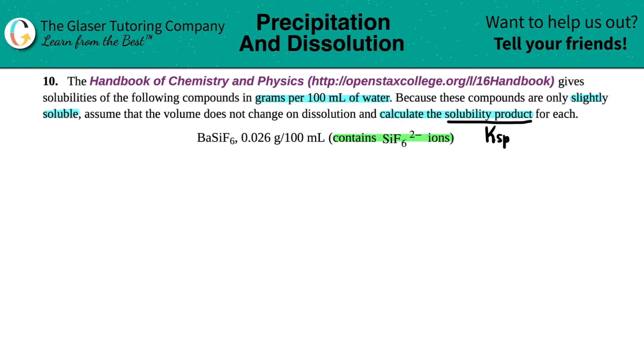They gave us the compound that's going to be dissolving. So I have BaSiF6, and this is a K expression, so this has to be at equilibrium. It's going to break down into its two ions. They told us that one of the ions is the SiF6 2-. So the split is between the Ba and the SiF6.